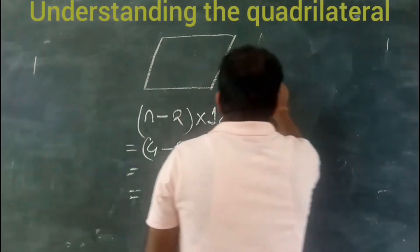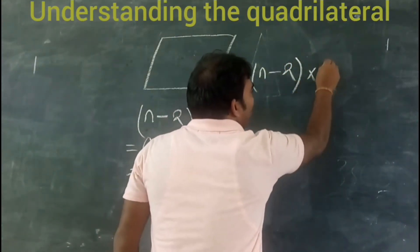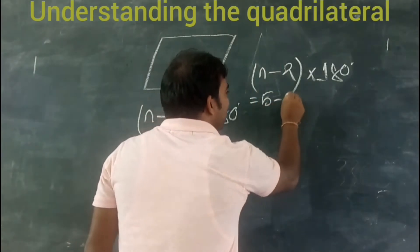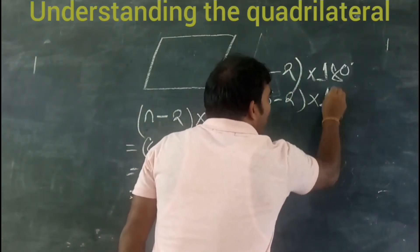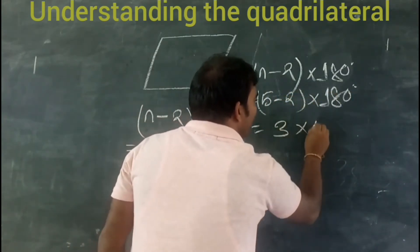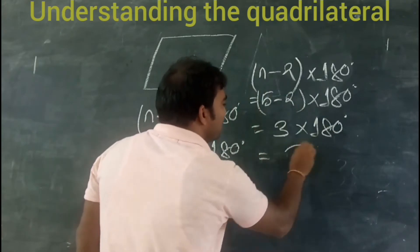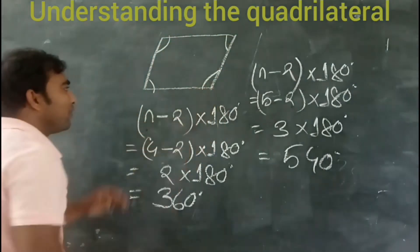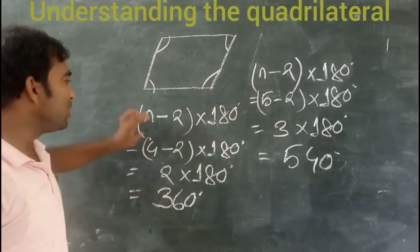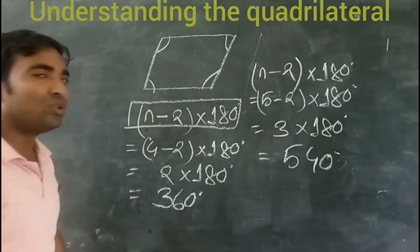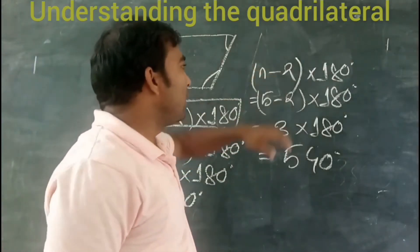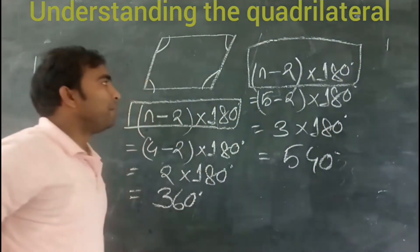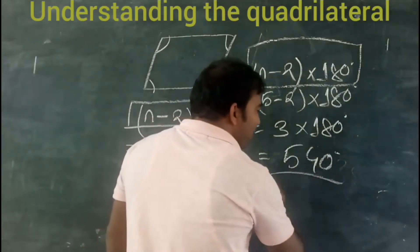If it is a pentagon, then n = 5, so it will be (5 − 2) × 180 degrees, that is 3 × 180 degrees, which gives us 540 degrees. So the total of all the interior angles in a pentagon is 540 degrees.